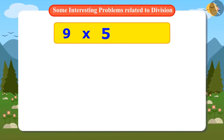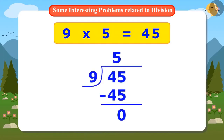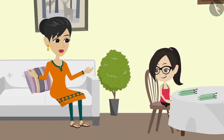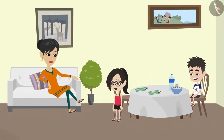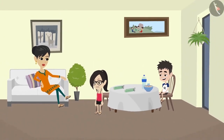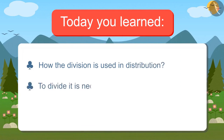I remember the multiplication table of nine. Nine fives are forty-five. This means that if among nine people forty-five pencils are to be divided, then everybody will get five pencils. This means the division method is easier. So now, Vandana, do you understand why we use division and how the tables help us? Yes, Mother. Now I will learn the multiplication tables with great attention. Today you learned about how division is used in distribution, and to divide, it is necessary to remember multiplication tables.